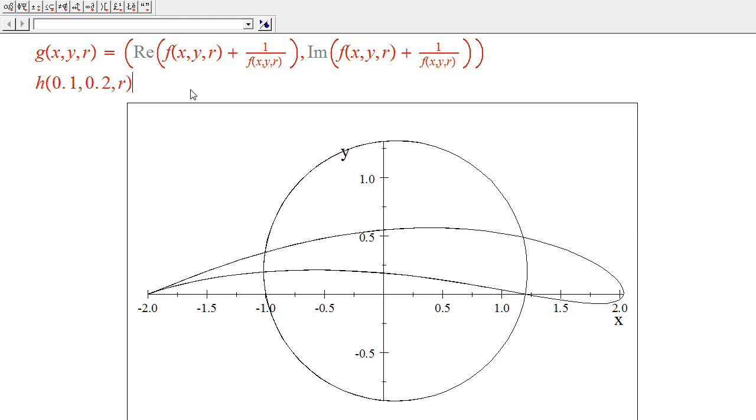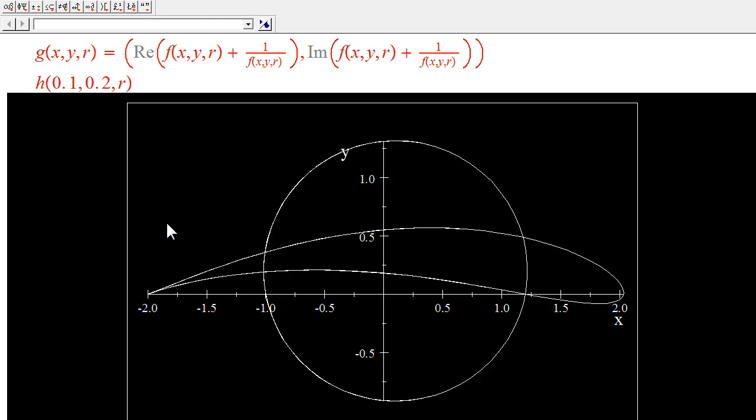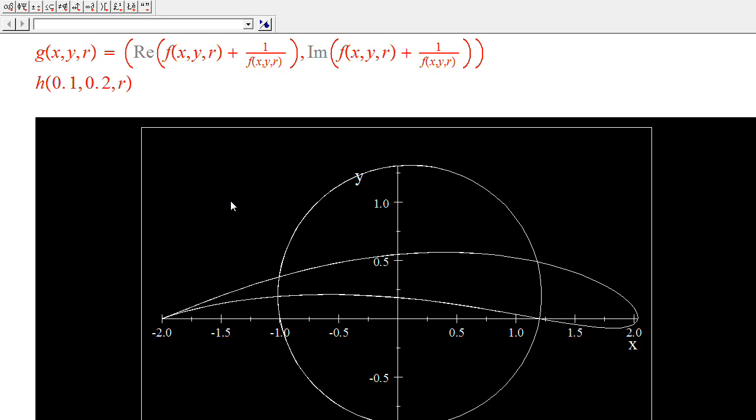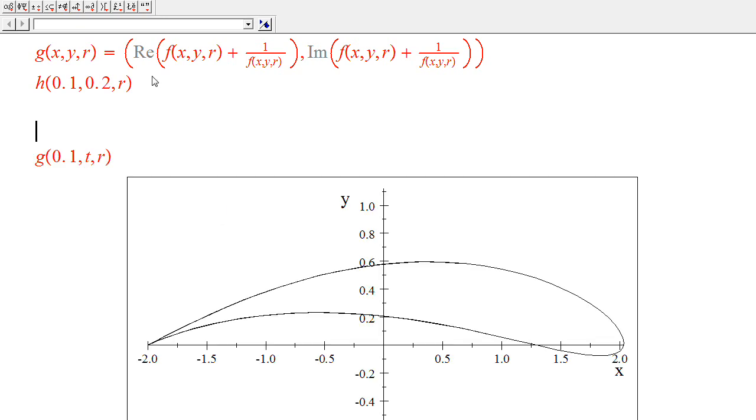If I'm going to use animations, let me show you how this can be done. Let's remove this first. By using animations, I can, for example, fix the X value and let the Y value be some parameter. Let's call it T, for example.